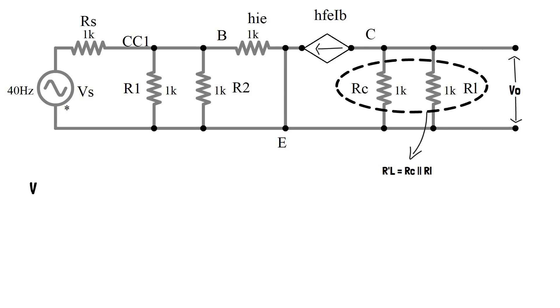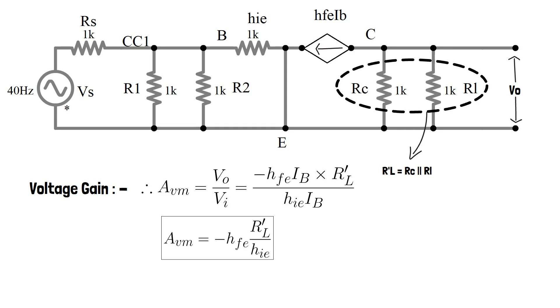We already know that to find the voltage gain using hybrid model is ratio of output voltage by input voltage. Therefore AVM equals output voltage by input voltage. Apply Kirchhoff's voltage law to the output side of hybrid model we get minus HFE IB times R prime L by HIE times IB. As IB is common we can cancel it. So the final equation is AVM equals minus HFE times R prime L by HIE.